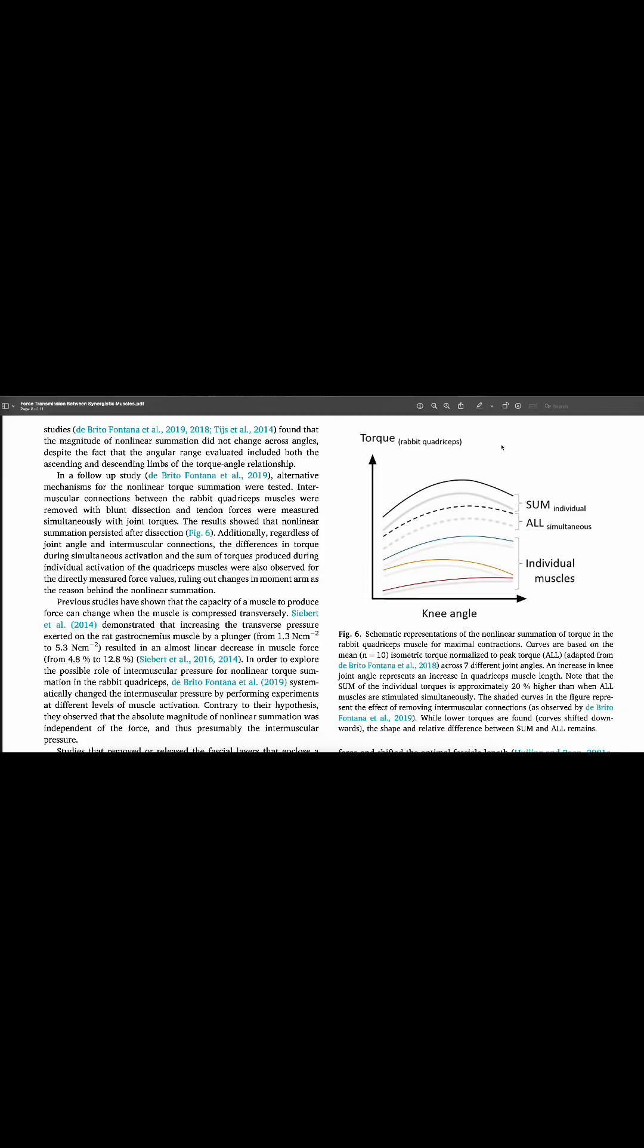Something that really jumped out at me looking at this graph here is essentially what we're seeing here is the theoretical force summation based on what multiple contributing muscles can produce based on theoretical predictions or projections. Taking the summation of those and what they're suggesting in this study is that essentially it becomes a lot more than that. Or the force generation can be much higher than that because we are not accounting for these epimuscular connections that are also transmitting forces that are essentially being remissed through the math.